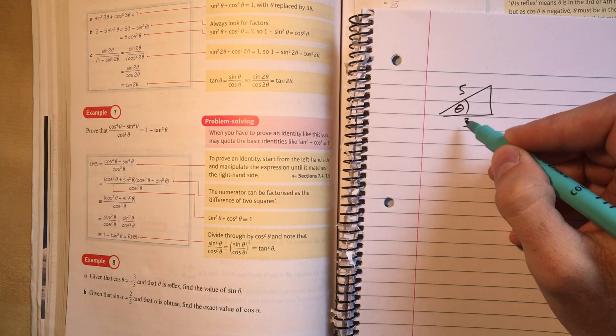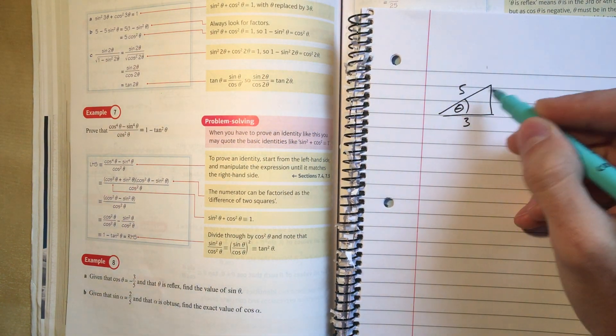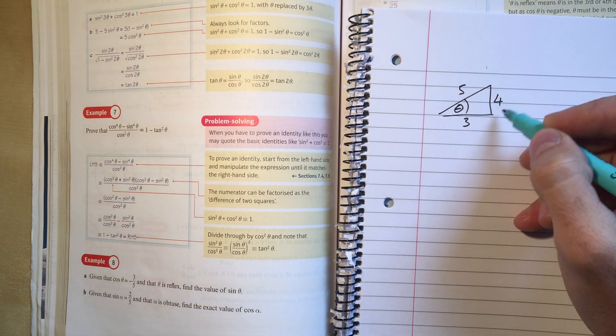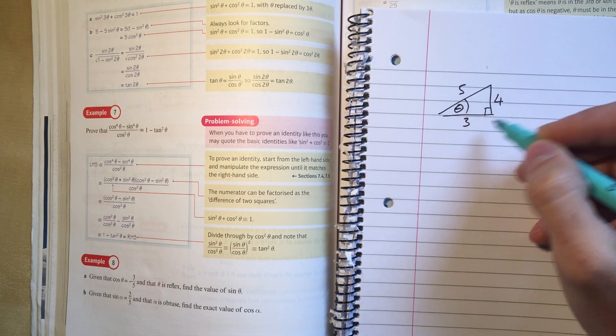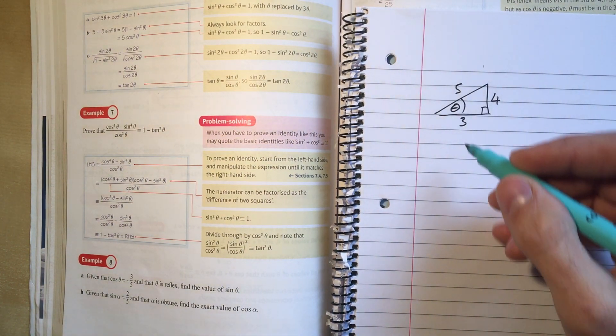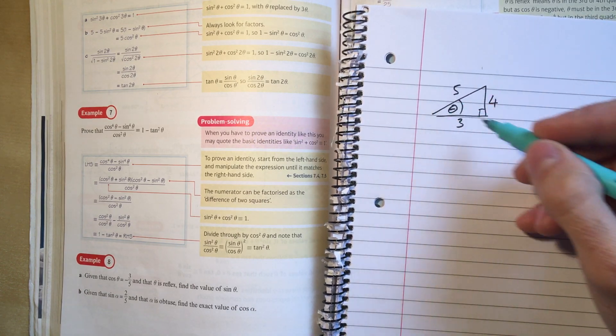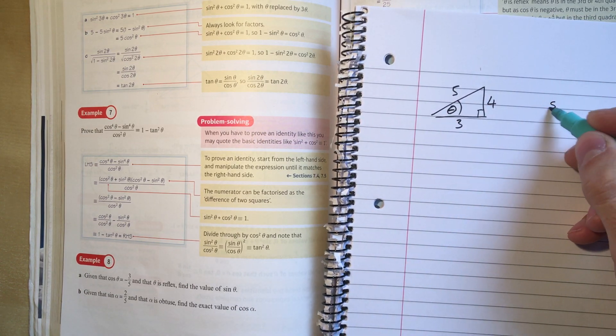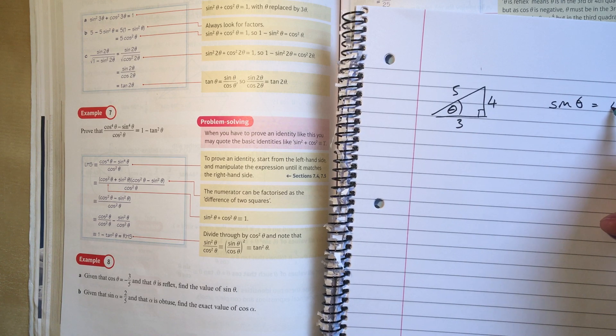Here's my theta, this is three-fifths. I'm going to use Pythagoras theorem on this triangle and I'm going to say that this side here then works out to be four. Check me if you want, but that's what it's going to work out to be. So this is a three-four-five triangle. So sine theta is four-fifths.